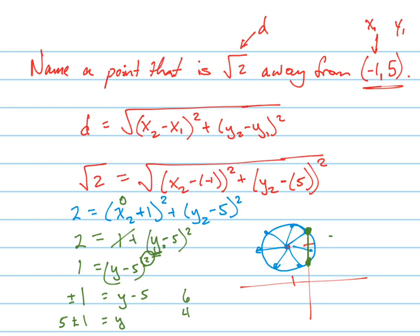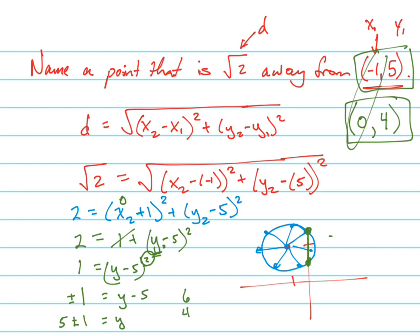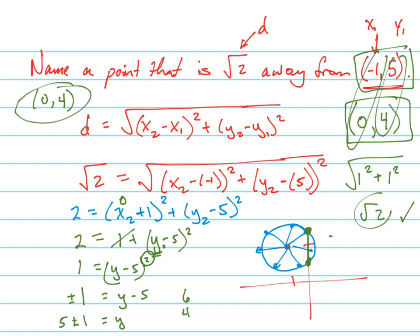Either one of those points works. So the point is — remember we picked 0 for x — the other value is 4 or 6, so either (0, 4) or (0, 6) would work. To verify, use the distance formula: the x's are 1 away and the y's are 1 away, so the square root of 1 squared plus 1 squared equals √2. That checks out. You could also pick any other number on this circle by choosing a different x value and solving.